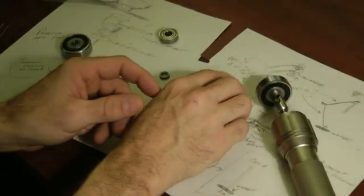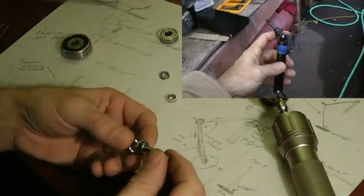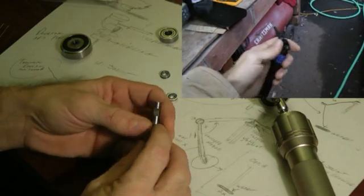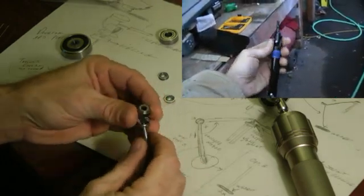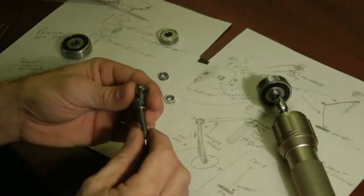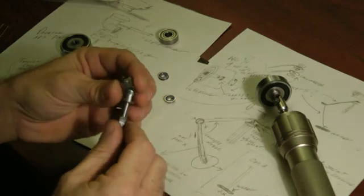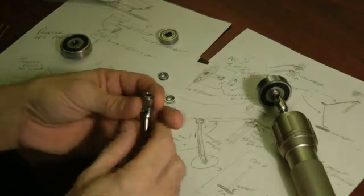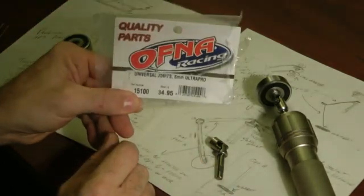As far as the U-joint itself, I started out with a Traxxas U-joint. A few people out there have used that one. It's plastic. It was fine. It just didn't have the range of movement that I wanted, and it just didn't seem quite as fluid. I looked at a couple other designs, and a couple of the guys used this U-joint here. It's an Ofna U-joint, model number 15100.